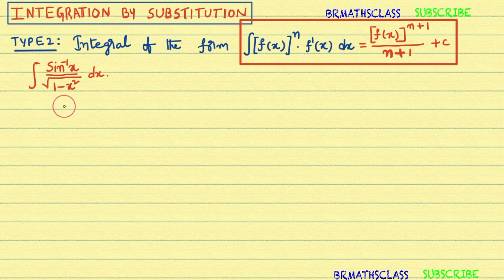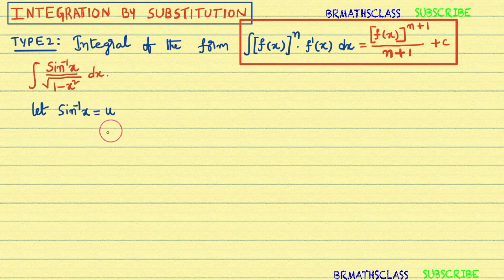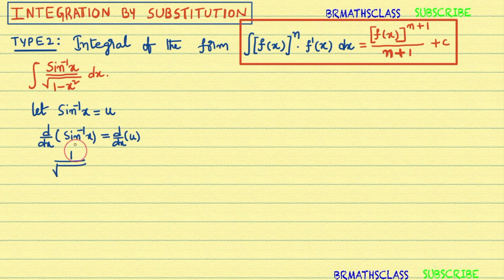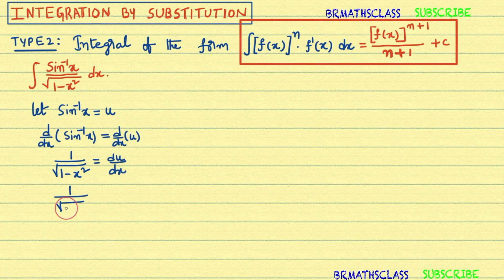To do this problem by substitution method, we need to consider some expression as u. Let sin inverse x equal to u. Now differentiate with respect to x on both sides. The derivative of sin inverse x is 1 divided by root over 1 minus x square, equal to du by dx. Taking dx to the other side gives: 1 divided by root over 1 minus x square into dx equal to du.